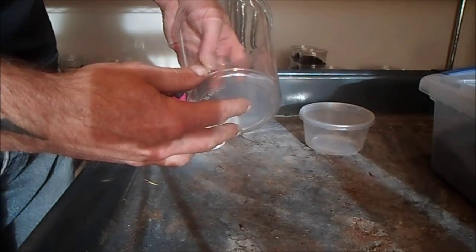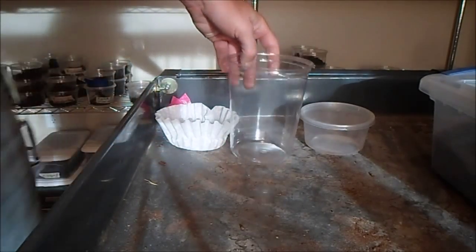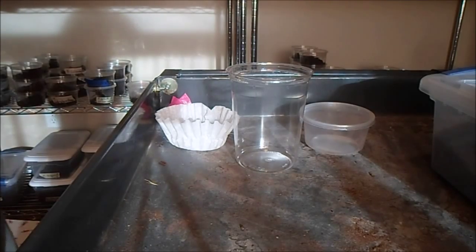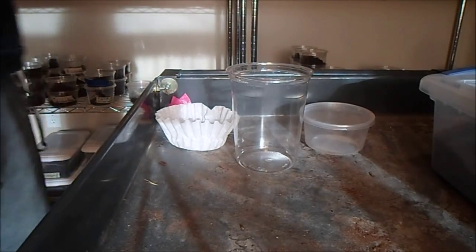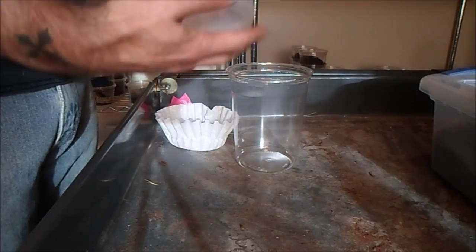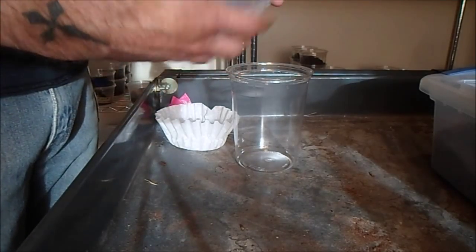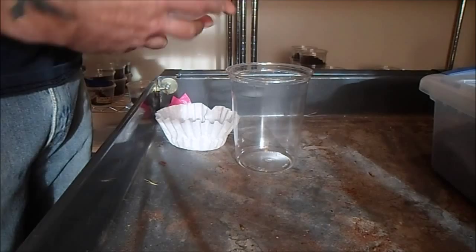So these are, I believe, 32 ounce deli containers. You can buy them online just for deli stores. They sell them. I believe this one's an 8 ounce. This one's kind of a white. I like the clears, but this is just one I had sitting around.